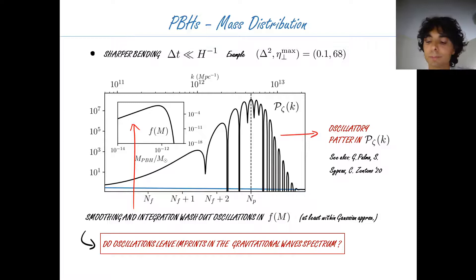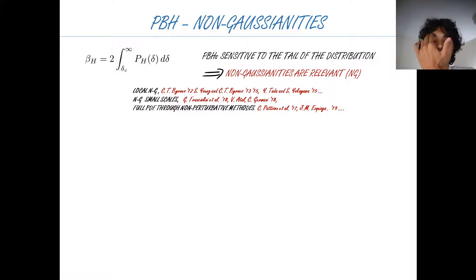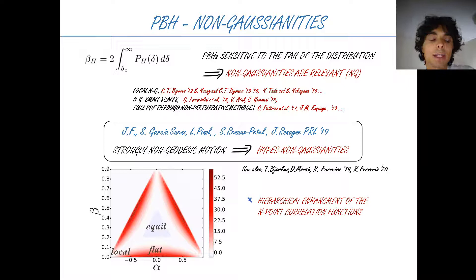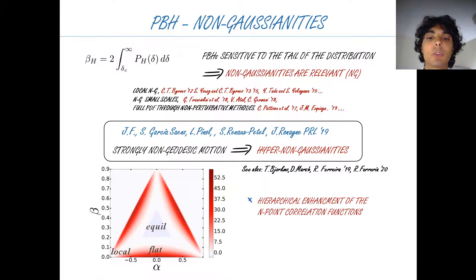It is well known that primordial black hole generation is a very rare phenomenon, sensitive to the tail of the distribution, so assuming Gaussianity is often not enough. As future work, we aim to study non-Gaussianity in strongly non-geodesic motion. We show there is a hierarchical structure at every order classifying a peculiar type of non-Gaussianity of the flattened type in these models, and the idea is to use this result to characterize effects on the PBH mass distribution.